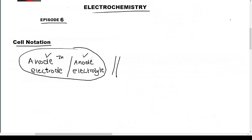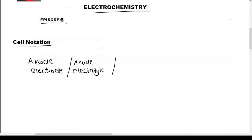We know that the electrolyte is zinc sulfate. So when you're writing down a cell notation: anode electrode, then anode electrolyte, then double slash, and then cathode electrolyte.